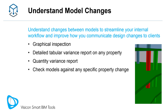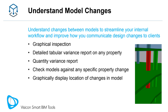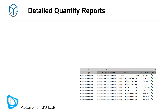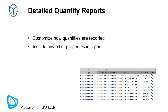You can also configure the variance report to check against any specific property change — for example, did the length of any beam change? You have the choice of creating tabular variance reports or having Visicon display the changes graphically on your model. Use 3D Boolean difference to identify exactly how the geometry of one model changed against another. Creating detailed and customizable quantity reports is very easy. You can determine how quantities are reported and include any other project properties in your report.